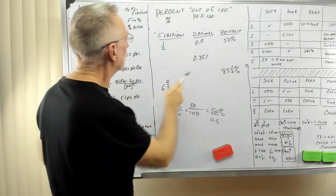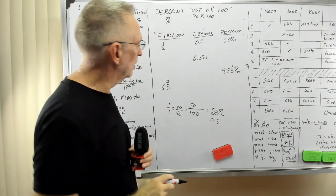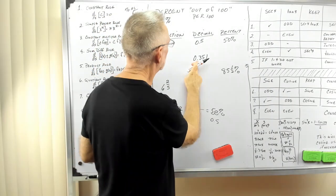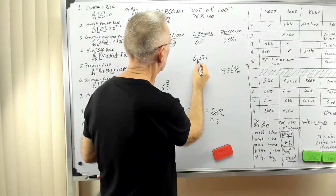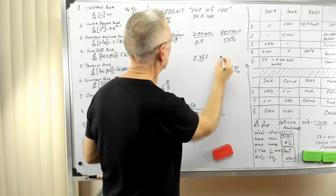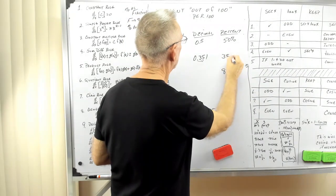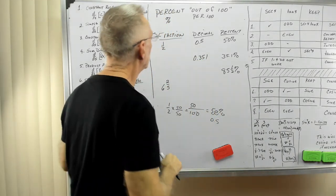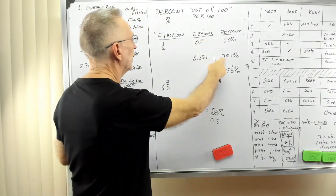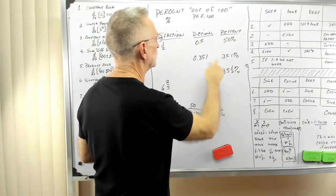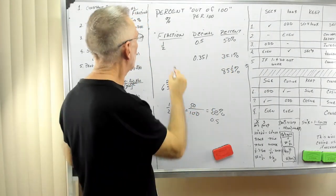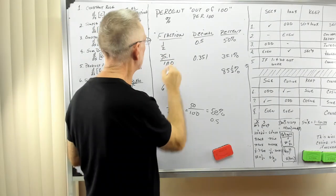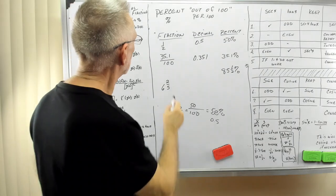Alright, now then. 0.351. Whoa. Well, as a percent, since we have a decimal, I can move the decimal point two places to the right. That's 35.1%. 35.1% means it's 35.1 per 100. 35.1 per 100.